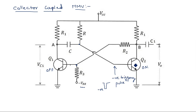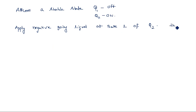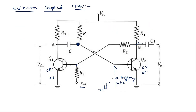Q2 was initially in the on state with sufficient base-to-emitter voltage, but the negative pulse forcibly brings Q2 into cutoff. When Q2 goes into the off state, a voltage develops across collector C2 that is sufficient to bring Q1 into the on state. So simultaneously, when the negative triggering pulse is applied at base 2 of Q2, Q2 comes into the off state and Q1 comes into the on state.